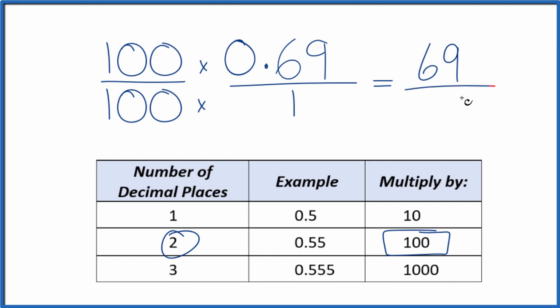So 100 times 1 is 100, and we have our fraction, 69 over 100. The decimal 0.69 equals the fraction 69 over 100.